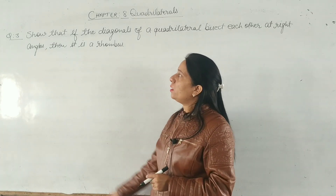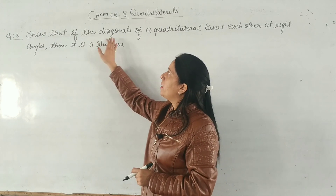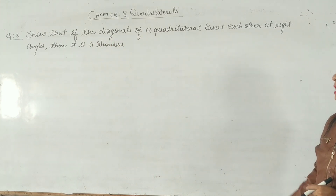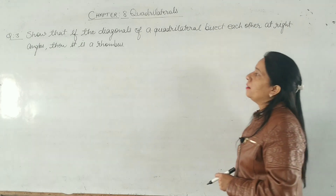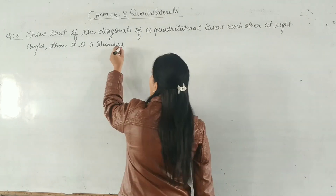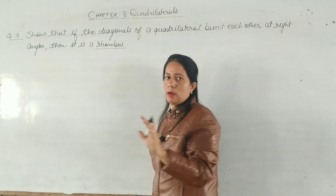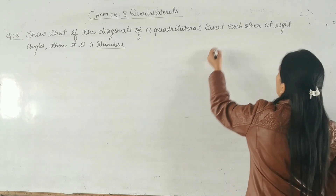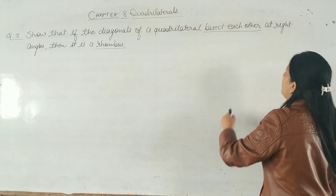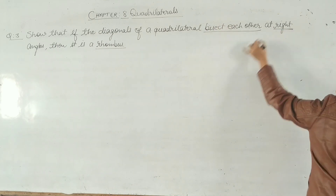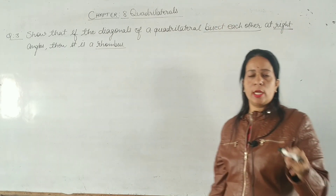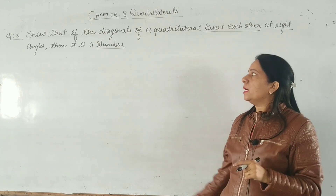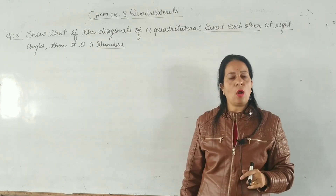Question 3: Show that if the diagonals of a quadrilateral bisect each other at right angles, then it is a rhombus. What is given? It is a quadrilateral whose diagonals bisect each other at right angles. You have to prove that it is a rhombus.